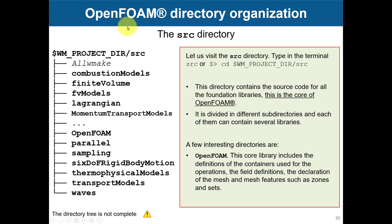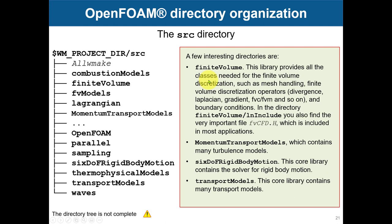Inside src you will find many directories. The most important ones are: the OpenFOAM core library, which includes containers used in OpenFOAM, field definitions, mesh declarations, and many other operations. In finiteVolume you have all the classes that address finite volume discretization and momentum transport. You also have turbulence models — a lot of models are included there. And for those doing rigid body motion, there's a library with all the core code for applications that deal with free body motion.